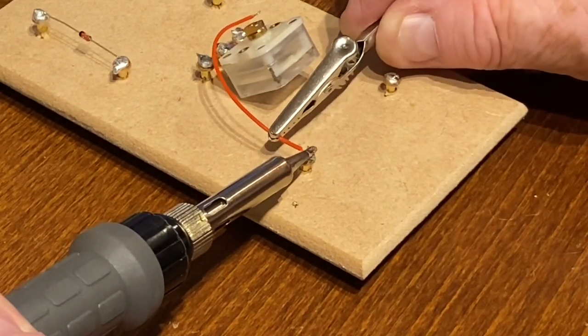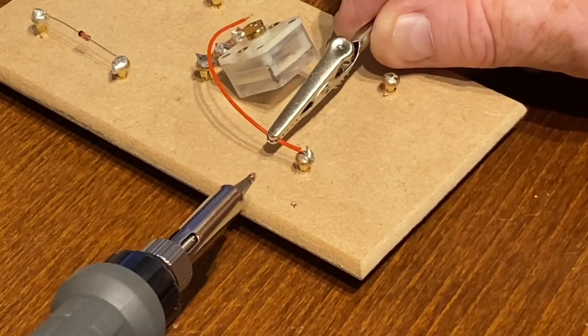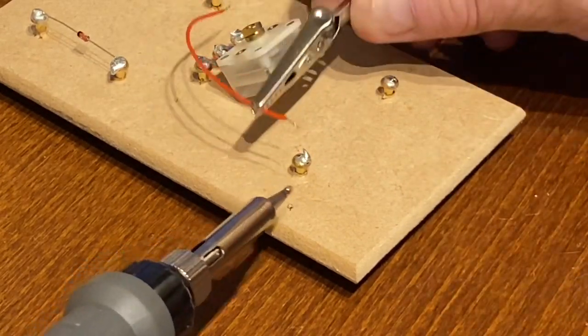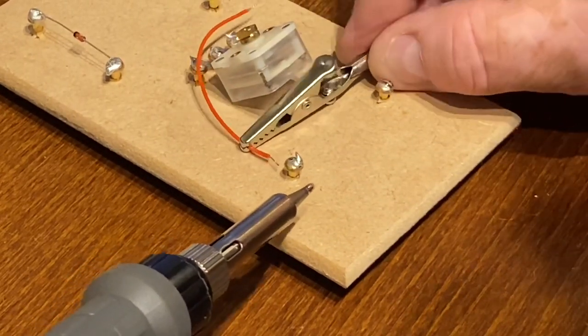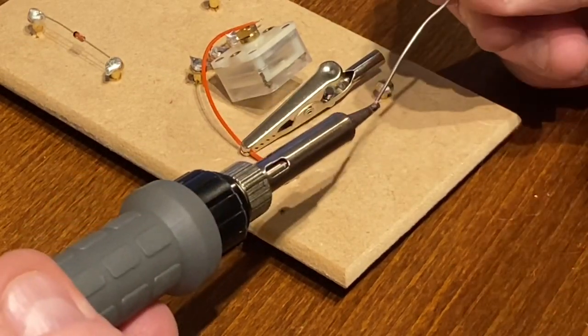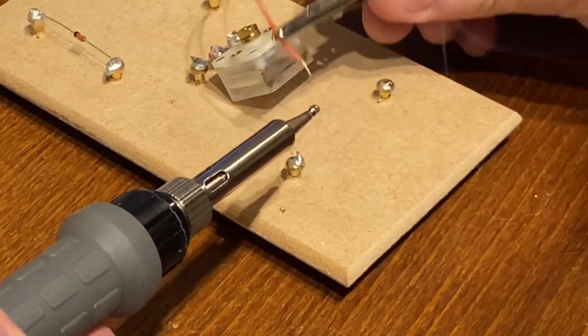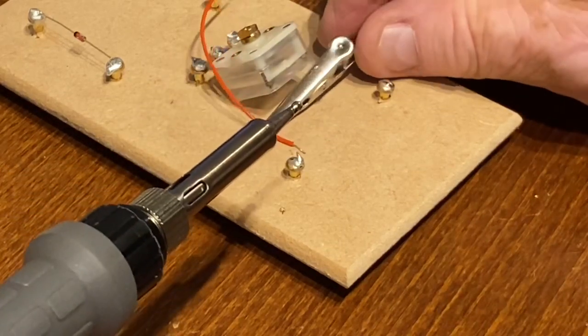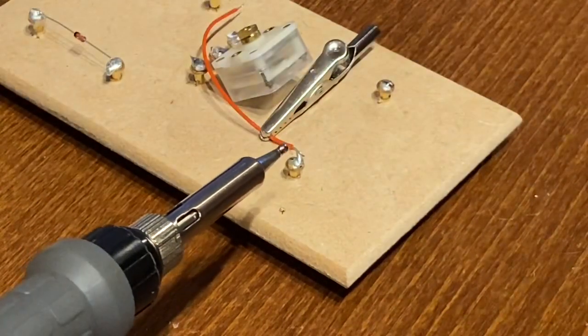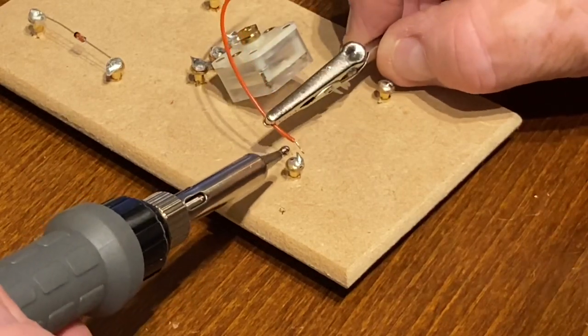One thing you have to remember when you're soldering though is that whatever the component or the piece that you're soldering to is, as you can see, if it's quite large, and even this small screw is quite large in these terms, it can suck a lot of the heat out of the tip of the soldering iron, which stops it from doing its job.